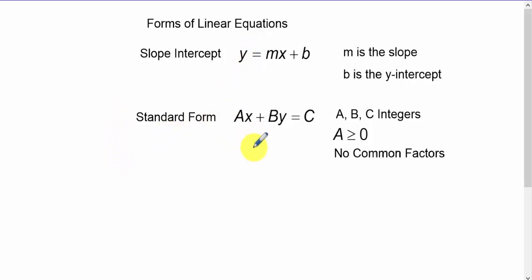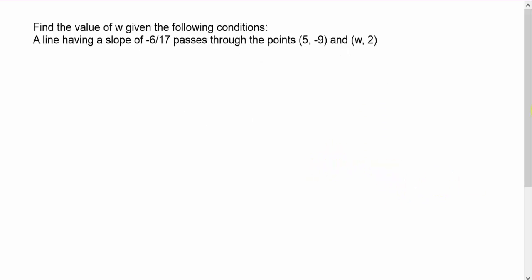And the standard form: ax + by = c. a, b, and c have to be integers, a is always greater than zero, and there's no common factors.